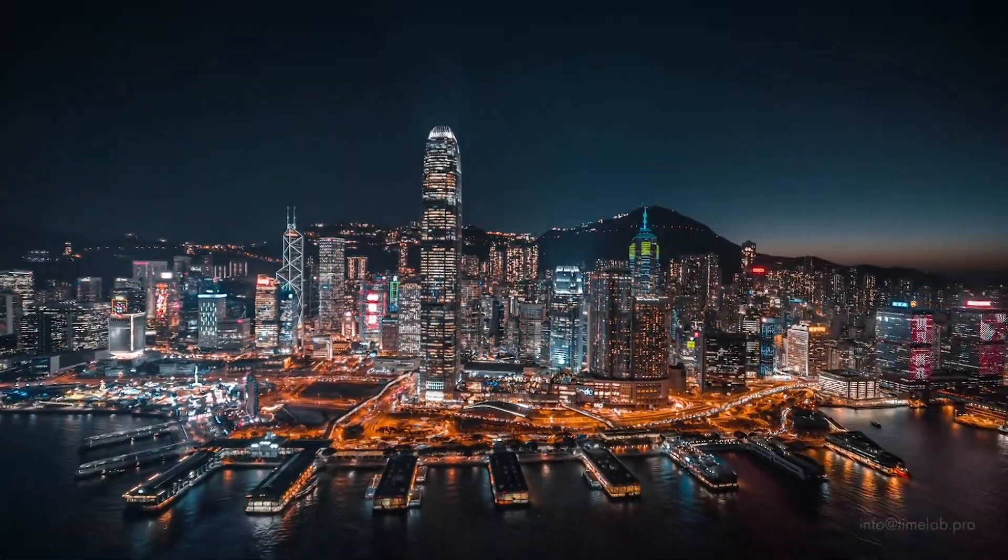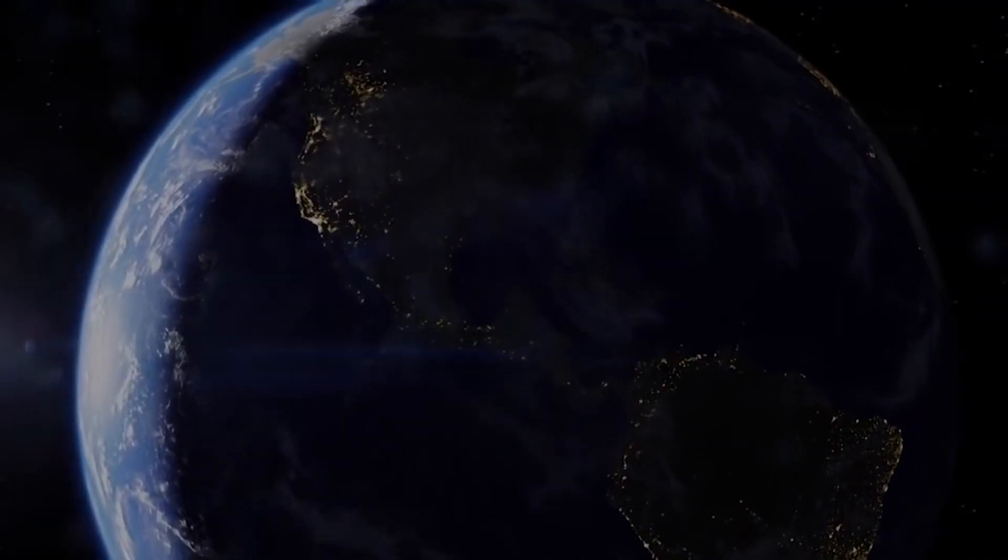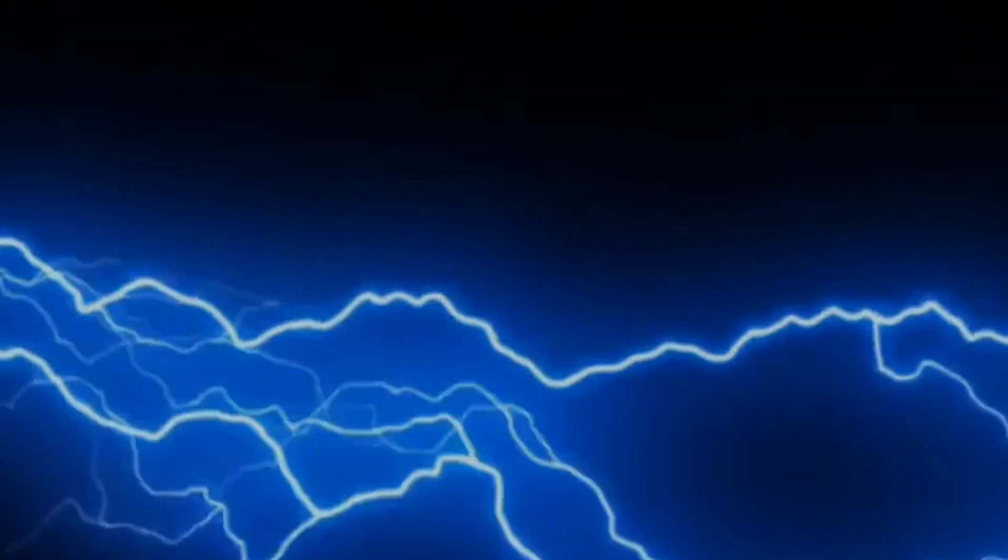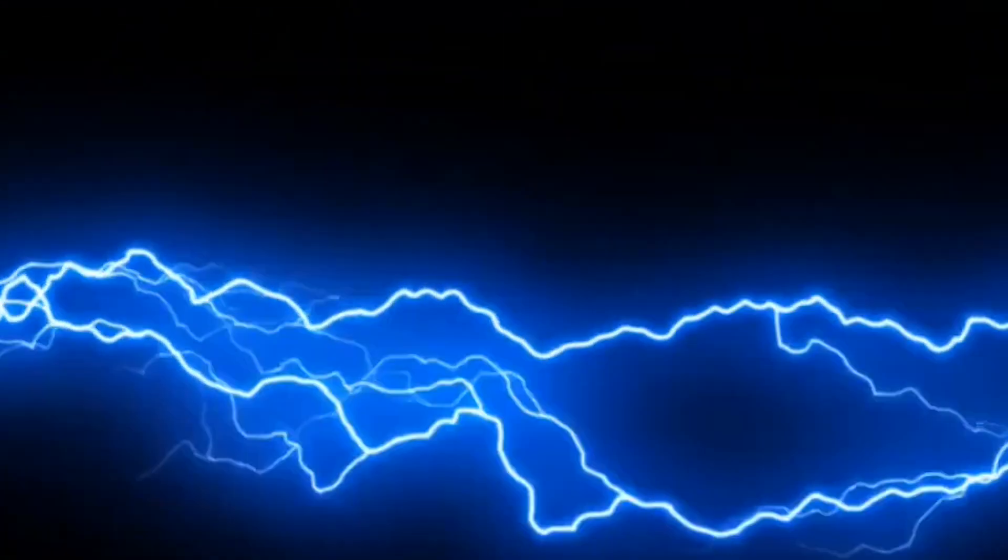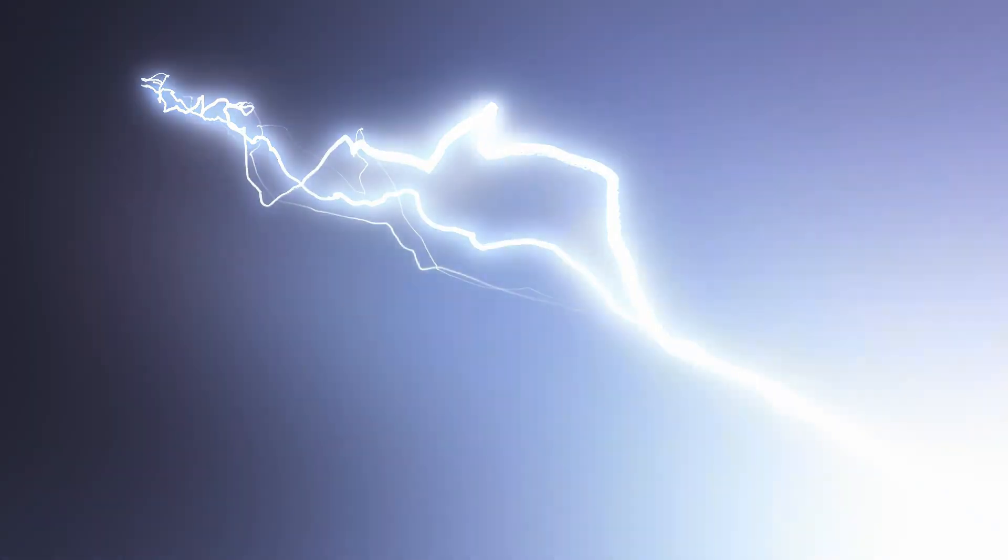But we have only been dependent on it for about 100 years. Electricity is a type of energy that builds up in one place or flows from one place to another. When electricity gathers in one place, it is known as static electricity. Electricity that moves from one place to another is called electric current.